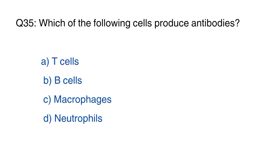Question number 35. Which of the following is silk produced in the body? The right option is B, B-cells.